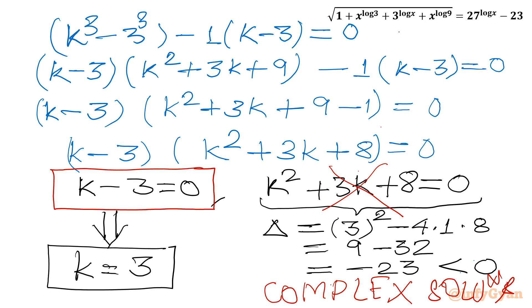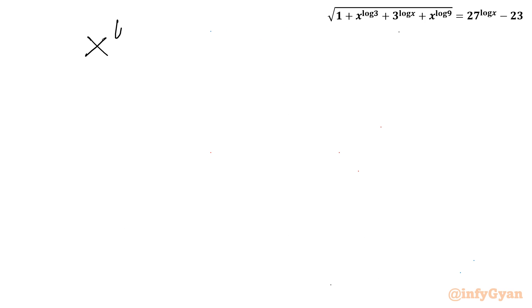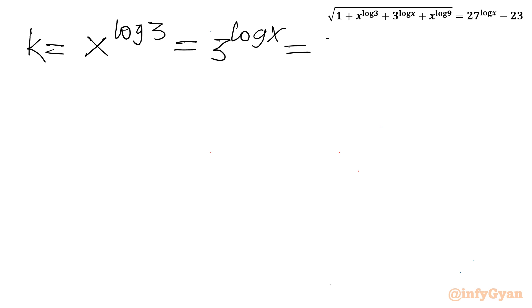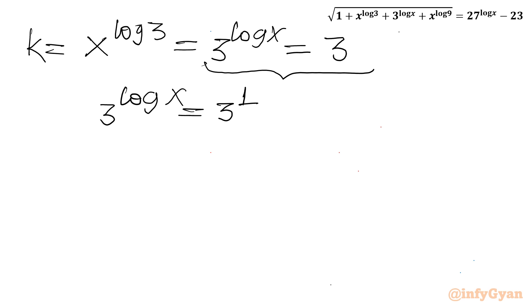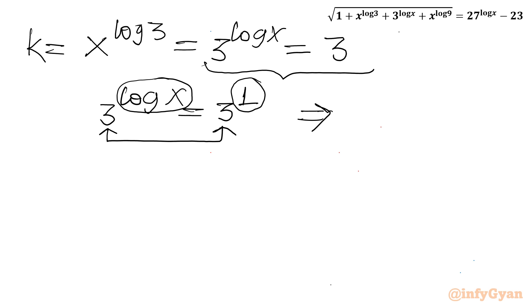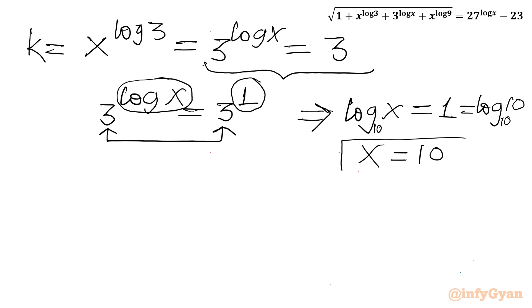Now substituting back: x^(log 3) equals k equals 3, or equivalently 3^(log x) equals 3. Comparing both sides, 3^(log x) equals 3^1, so log x equals 1. Since log has base 10, log x equals log 10, giving us x equals 10. This is the only real solution.